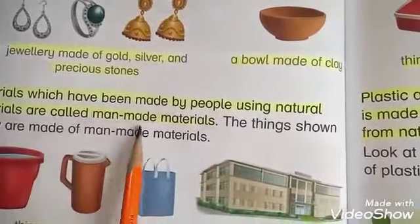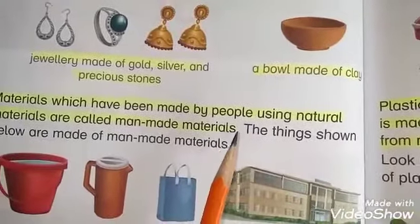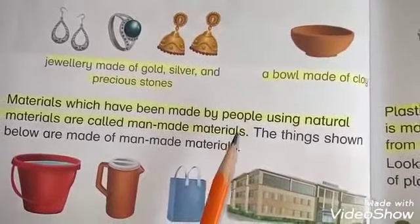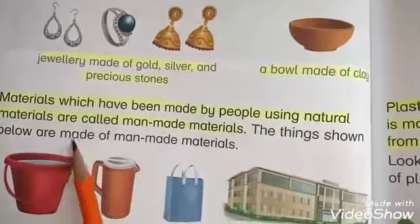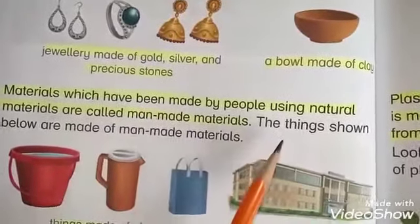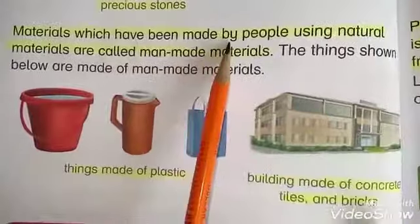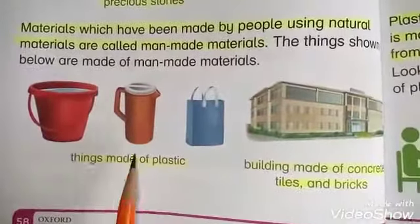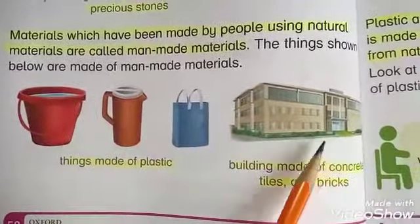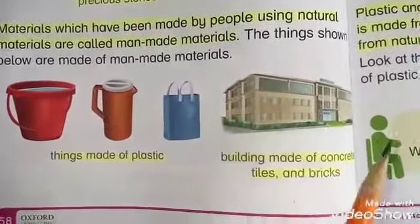Materials which have been made by people using natural materials are called manmade materials. Those things made of manmade things — like plastic things, buildings, concrete tiles, and bricks — are all examples of manmade materials.